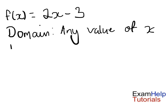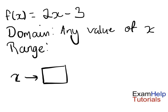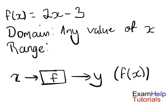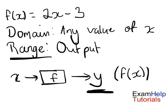We also have a range. So if we have our x, then we go to our function box f of x, and it brings out y. So the output — that is our range. The output can be f of x, which is also equal to y.